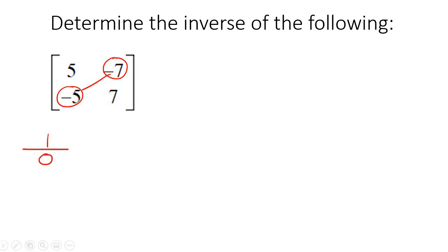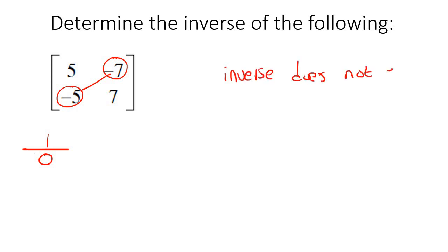Why do we stop? When you divide by 0, it's undefined — you get an error on your calculator. So the inverse does not exist. And that's it — that is how you find the inverse of a 2x2 matrix.